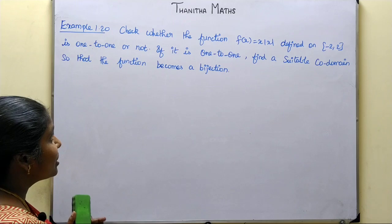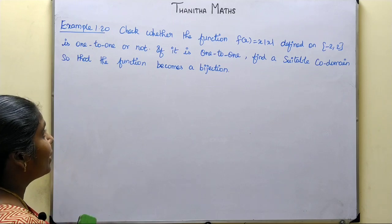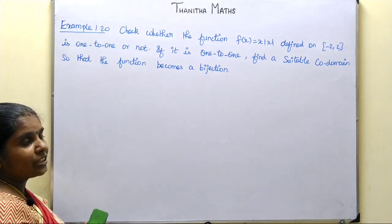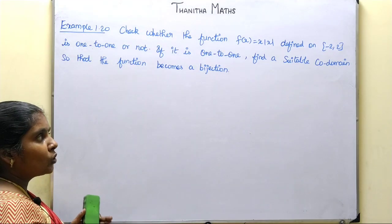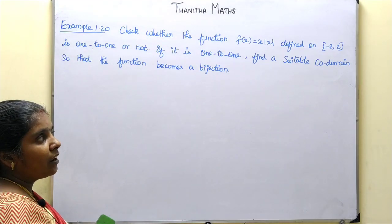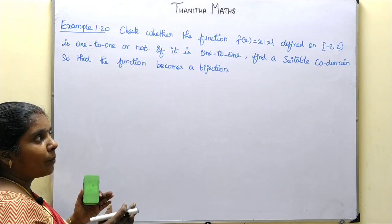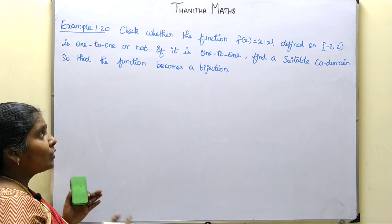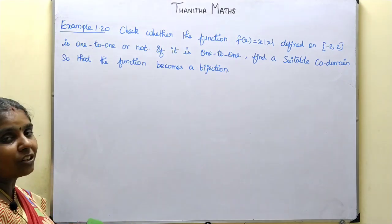First, check if it is a one-to-one function. If you have a one-to-one function and a suitable codomain, you have a bijection function.